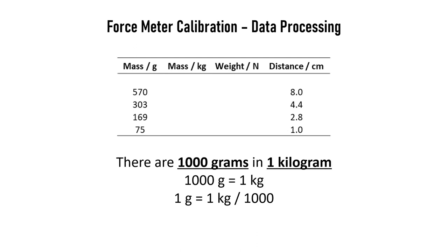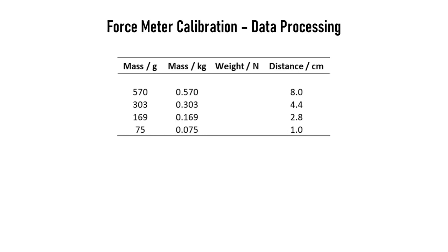So, what I'm going to do is the 570 we divide by a thousand, you get 0.57 kilograms. And we'll add each of those numbers in. You can see that it goes to 0.303, 0.169 and 0.075.